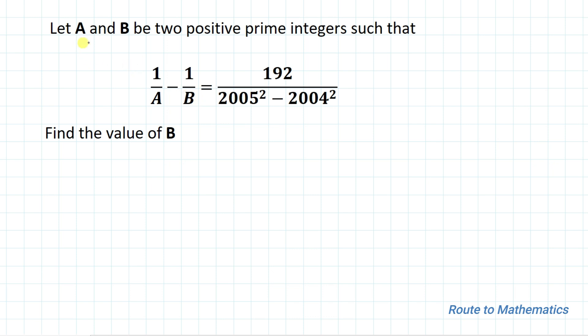The given question is: Let A and B be two positive prime integers such that 1/A - 1/B = 192/(2005² - 2004²). Find the value of B.